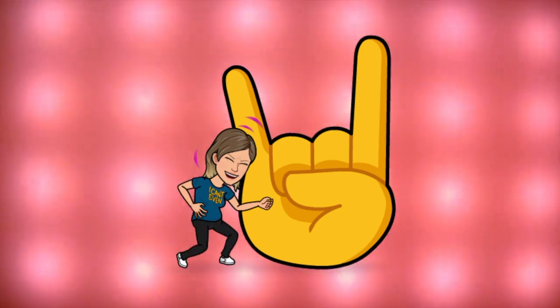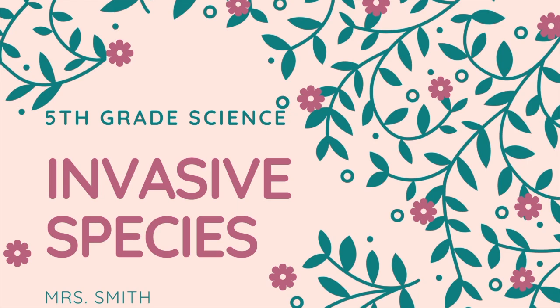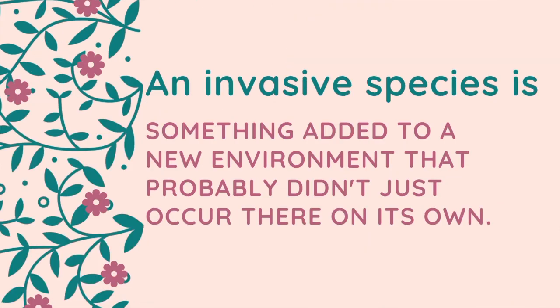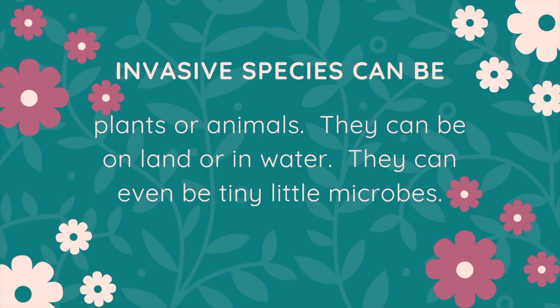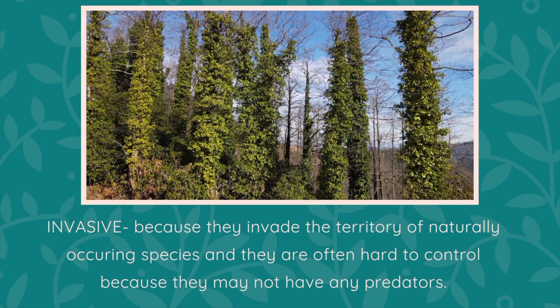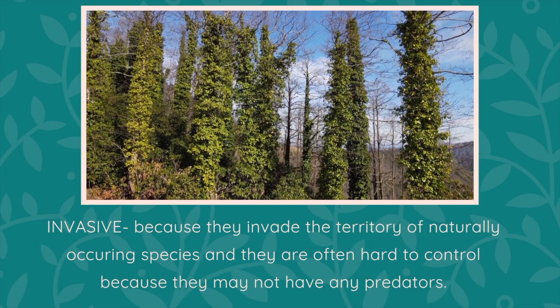We are going to learn about invasive species. An invasive species is a species added into a new environment that probably didn't just get there naturally on its own — it was probably carried in by humans or other organisms. They can be plants or animals, on land or in water, or even tiny little microbes. But they're invasive because they invade the territory of naturally occurring species, and they're often hard to control because they may not have any natural predators.